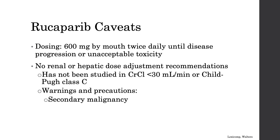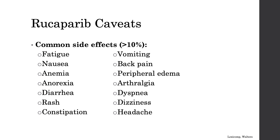Rucaparib is dosed 600 mg by mouth twice daily with no renal or hepatic dose adjustment recommendations, though it has not been studied in creatinine clearance less than 30 or Child-Pugh Class C. The main warning is secondary malignancy. Common side effects include fatigue, nausea, anemia, anorexia, diarrhea, rash, constipation, vomiting, back pain, peripheral edema, arthralgia, dyspnea, dizziness, and headache. For rash, patients should keep skin moisturized, avoid prolonged heat and direct sun exposure, and may use OTC antihistamines or steroids for management.